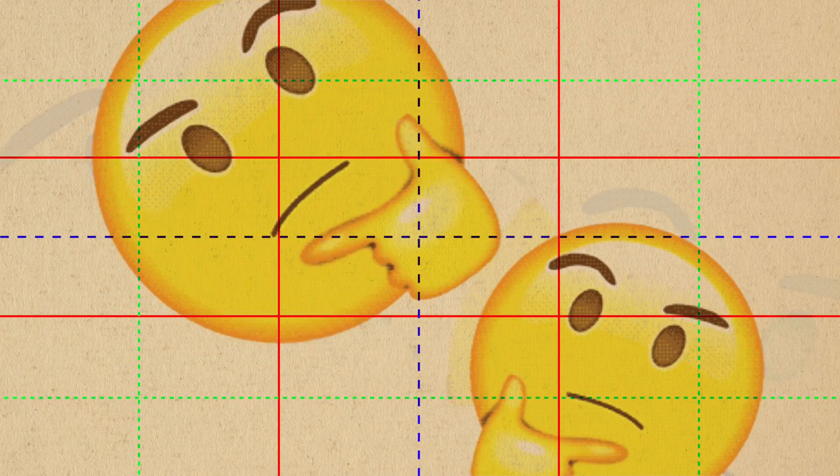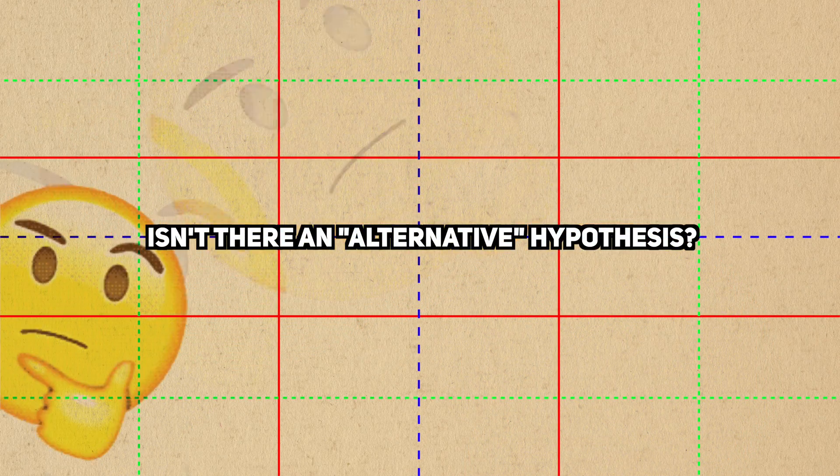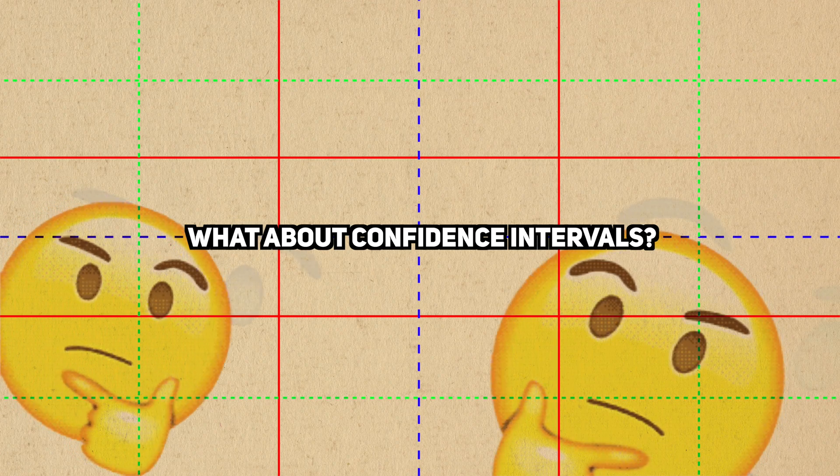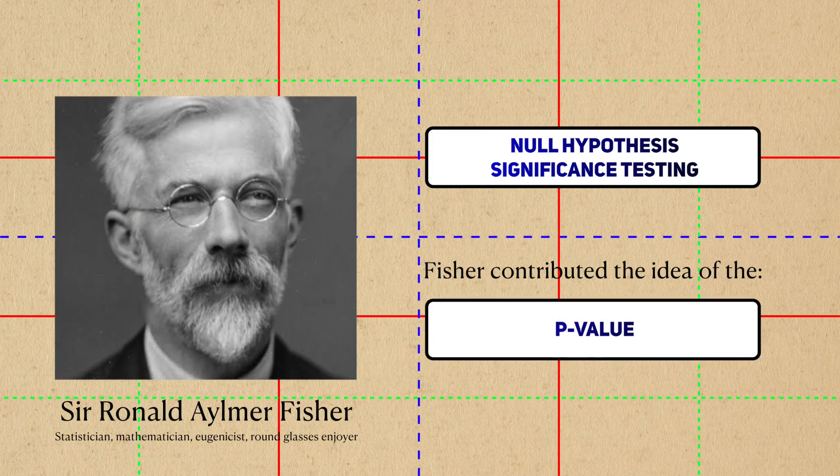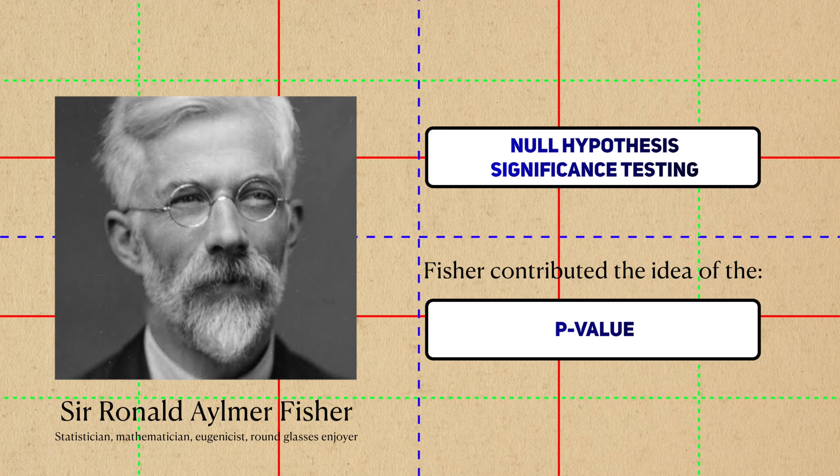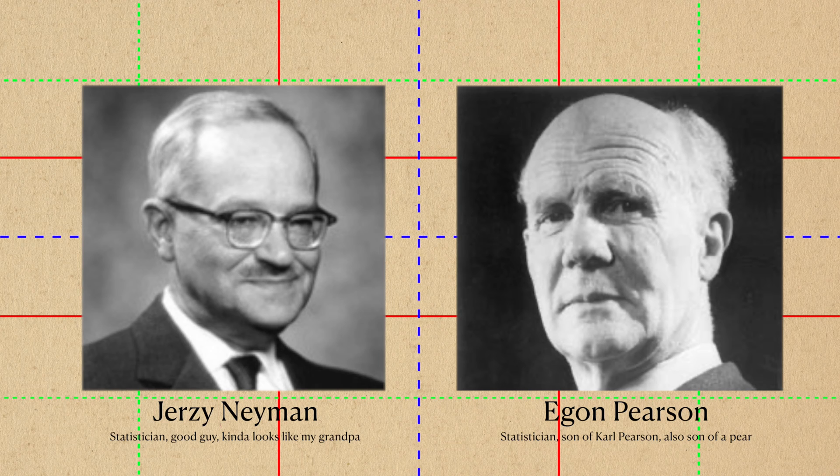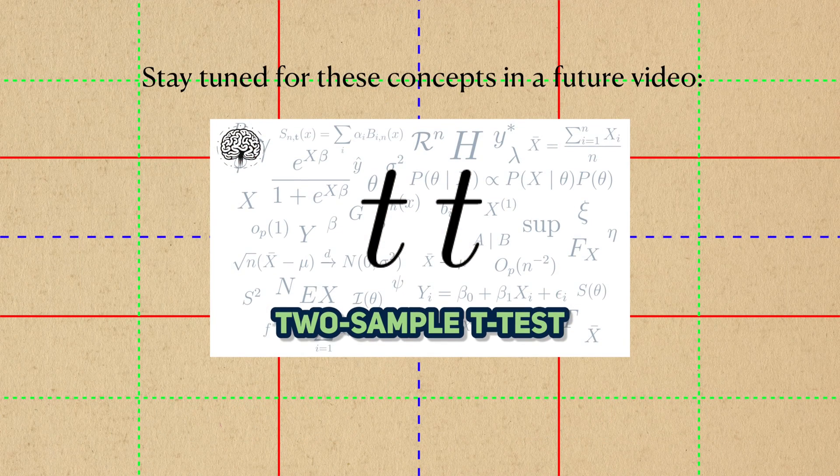Some of you may have questions. Isn't there an alternative hypothesis? What about confidence intervals? Fisher's contribution to the NHST was just the idea of the p-value, so I gave it the focus in this video. It was Jerzy Neyman and Egon Pearson who extended the NHST to include the alternative hypothesis and confidence intervals, and we'll cover them more in detail when we cover the two-sample t-tests.